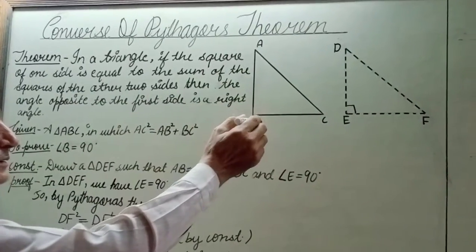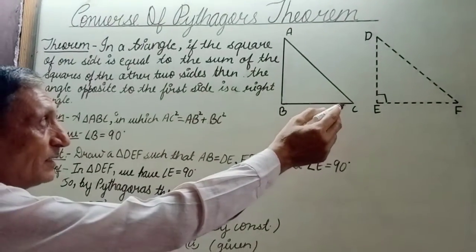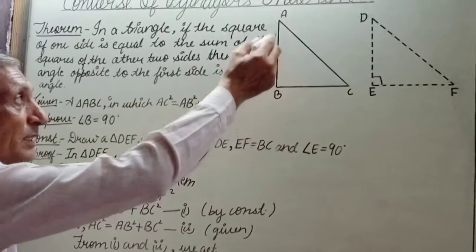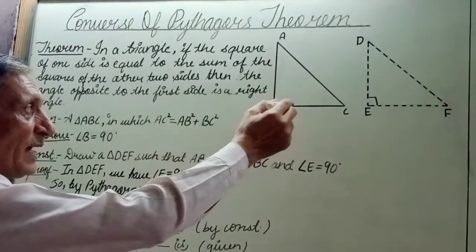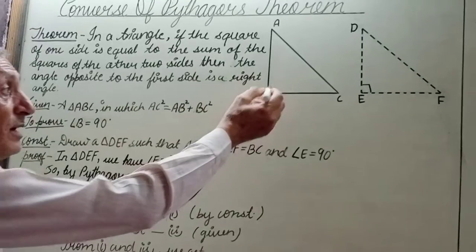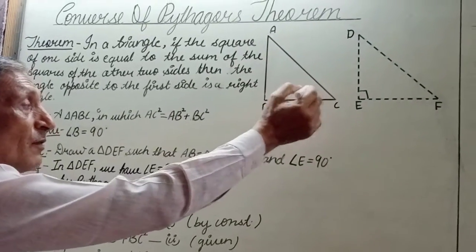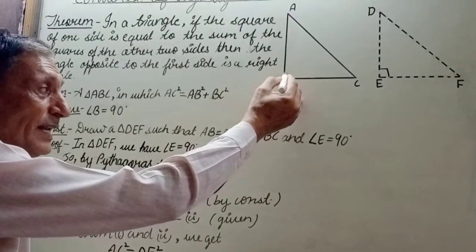In a triangle, if the square of one side is equal to the sum of the squares of the remaining two sides, then the angle opposite to the first side is 90 degrees. Is it a right angle?